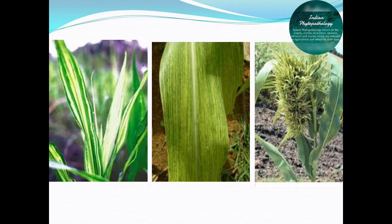Affected plants become stunted and exhibit a bushy appearance due to shortening of the internodes. This shortening of the internode with bushy appearance is the particular mark of identification for downy mildew of maize. Similarly, proliferation of axillary buds is another mark of identification. Proliferation of axillary buds on the stalk, tassel, and cobs is a common symptom of this downy mildew pathogen.